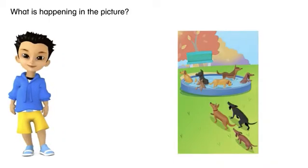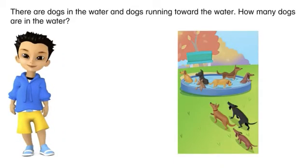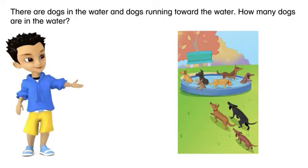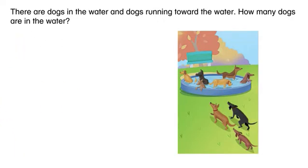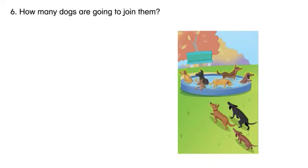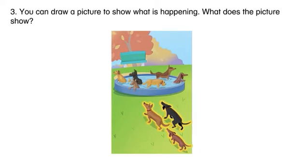What is happening in the picture? There are dogs in the water and dogs running toward the water. How many dogs are in the water? Six. How many dogs are going to join them? Three.